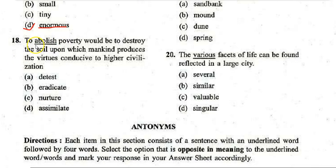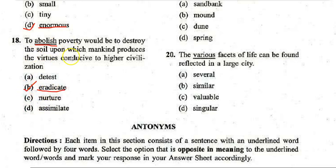Next: 'To abolish poverty would be to destroy the soil upon which mankind produces the virtues conducive to higher civilization.' Options: A. Detest, B. Eradicate, C. Nurture, D. Assimilate. The correct answer is B — 'eradicate.' 'To abolish poverty' means the same as 'to eradicate poverty.'